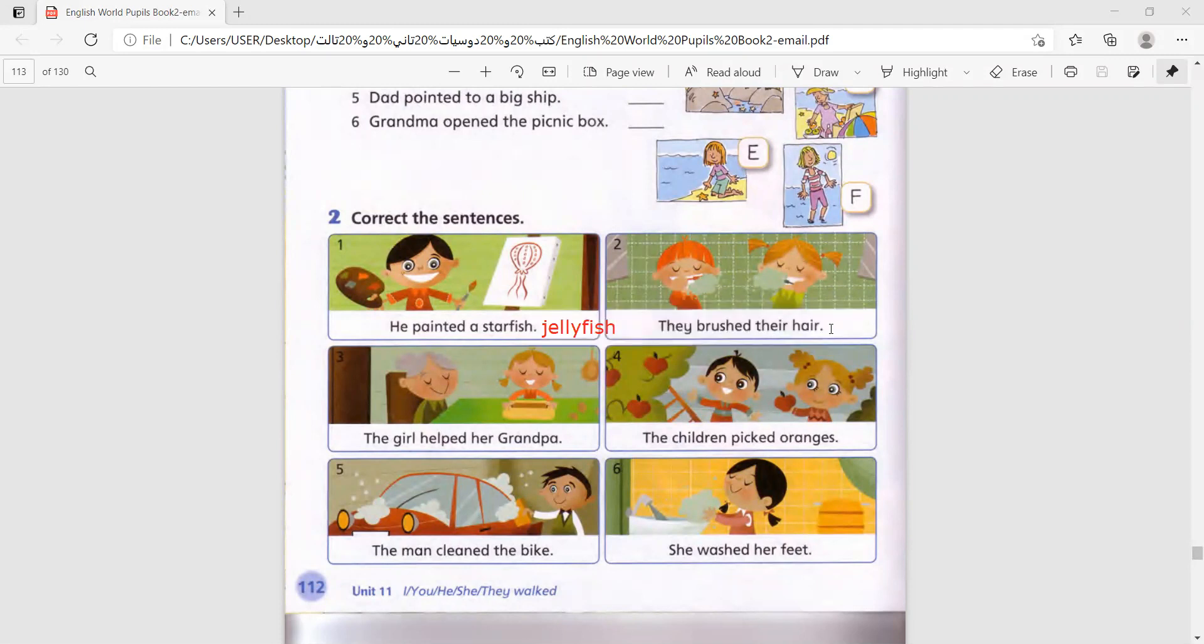They brushed their hair. No, their teeth. The girl helped her grandma, not her grandpa. The children picked apples, not oranges. The man cleaned the bike. No, the man cleaned the car. And she washed her feet. No, she washed her hands.